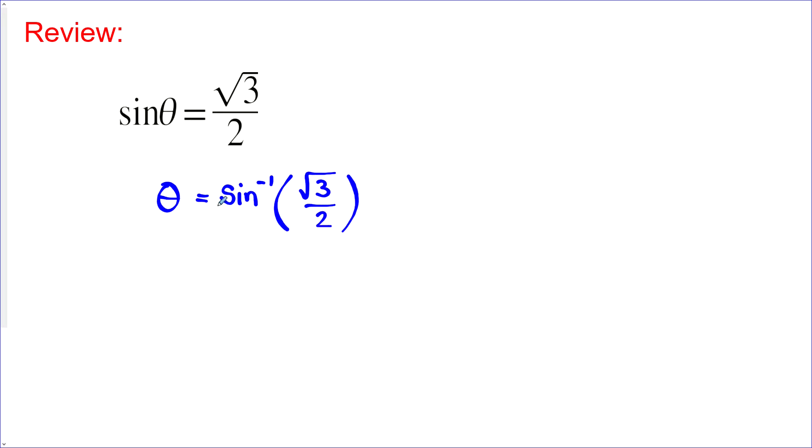Now, in other places, they can use arc sine, which is a bit nicer, but here we're stuck using this notation. Now, this is actually one of our special ratios that we know. So in quadrant 1, at least, this would be 60 degrees.